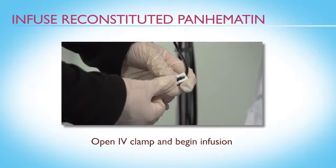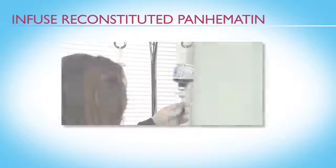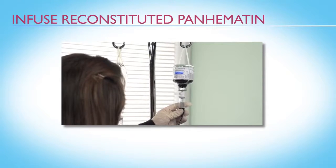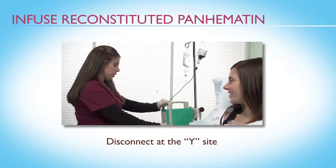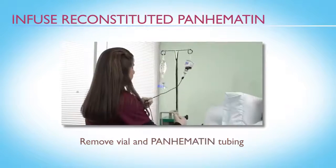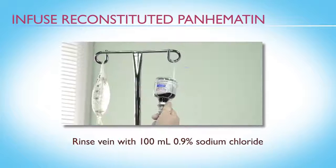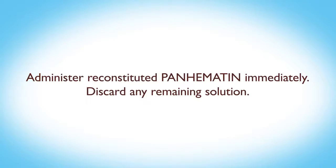The prescribed dose of Panhematin should be infused over a period of at least 30 minutes. After the full dose is given, stop the infusion pump, disconnect the Panhematin at the Y site, and remove the vial and Panhematin tubing. Finally, rinse the vein with 100 milliliters of 0.9% sodium chloride. Remember, Panhematin does not contain preservative, so administer reconstituted Panhematin immediately and discard any solution remaining after the infusion.